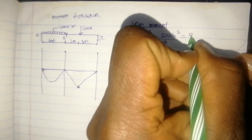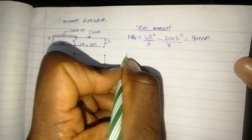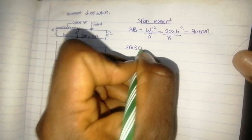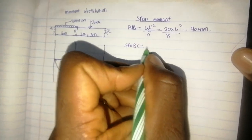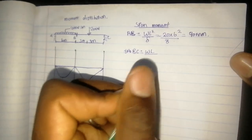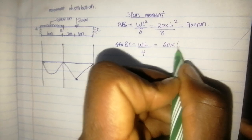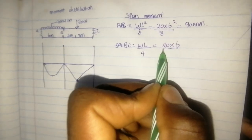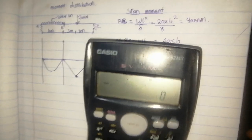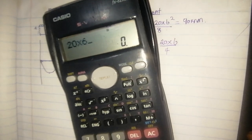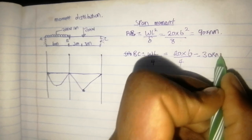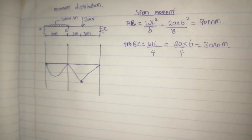We go to span BC, which has a point load with uniform span length. The formula is WL divided by 4. So it will be 20 times 6 divided by 4, which equals 30 kN·m. We are done with span moment.